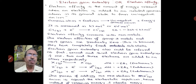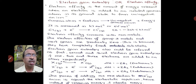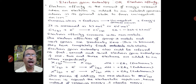Electron gain enthalpy can also be referred to as first, second, and third electron gain enthalpies, if one, two, or three electrons are added to an atom respectively.